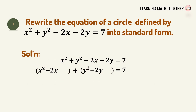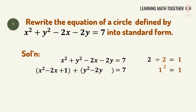Next, we solve for that third term. Get the numerical coefficient of x, which is 2 — disregard the sign. Divide it by 2: 2 divided by 2 equals 1. Then square the quotient: 1 squared equals 1. Therefore we add 1 on the left side, and when you do that on the left side of the equation you also have to do that on the right side to keep the equation balanced.